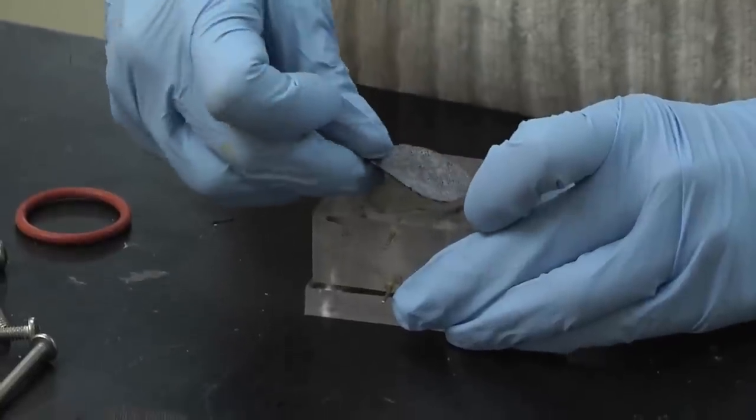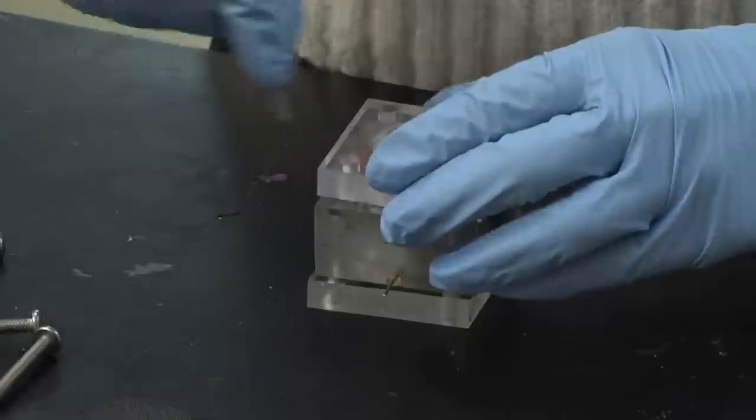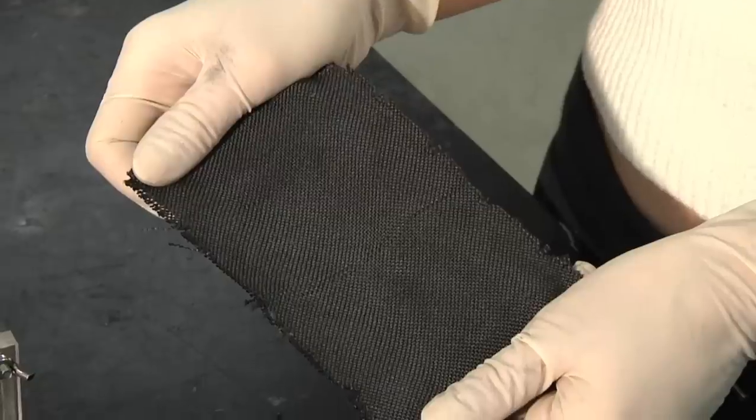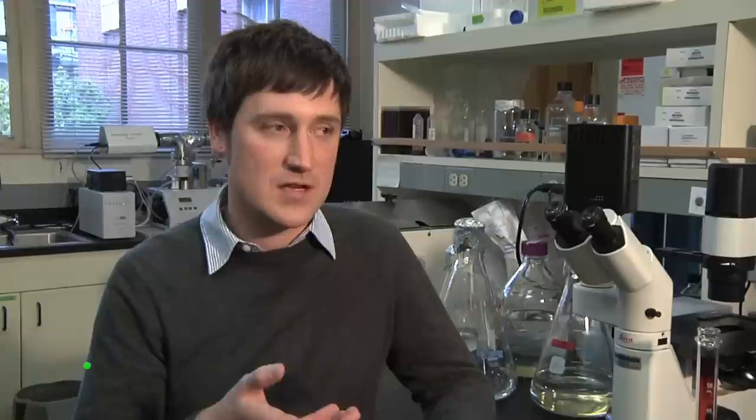An MFC, or microbial fuel cell, there are two chambers, one chamber the anode, one chamber the cathode. So this is the carbon cloth that is used for the anode.